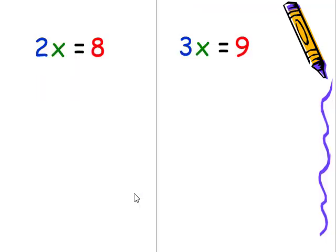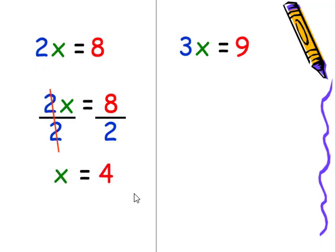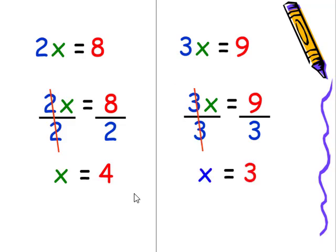In this case, I have 2 times x. To undo that multiplication of 2, we'll divide both sides by 2. The 2s will cancel, leaving me with x. 8 divided by 2 is 4. The same process will be used in the next one. We're going to divide both sides by 3. The 3s will cancel, leaving me with x. And 9 divided by 3 is 3.